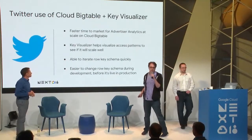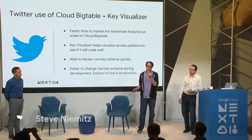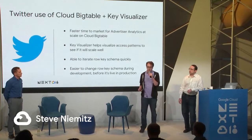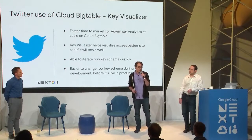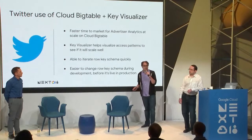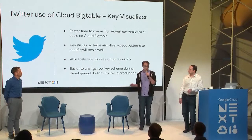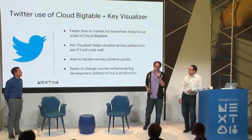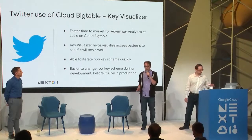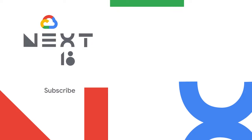For Twitter, Bigtable and Key Visualizer enabled a fast time to market for our improved advertiser analytics product. Key Visualizer gave us confidence we could scale up with a well-designed system. We were able to iterate on the row key design much faster than we could have by inferring results from metrics like P99 latency. It let us change the row key schema during development, quickly see what happened, and iterate without going live in production. That's all — thank you very much.